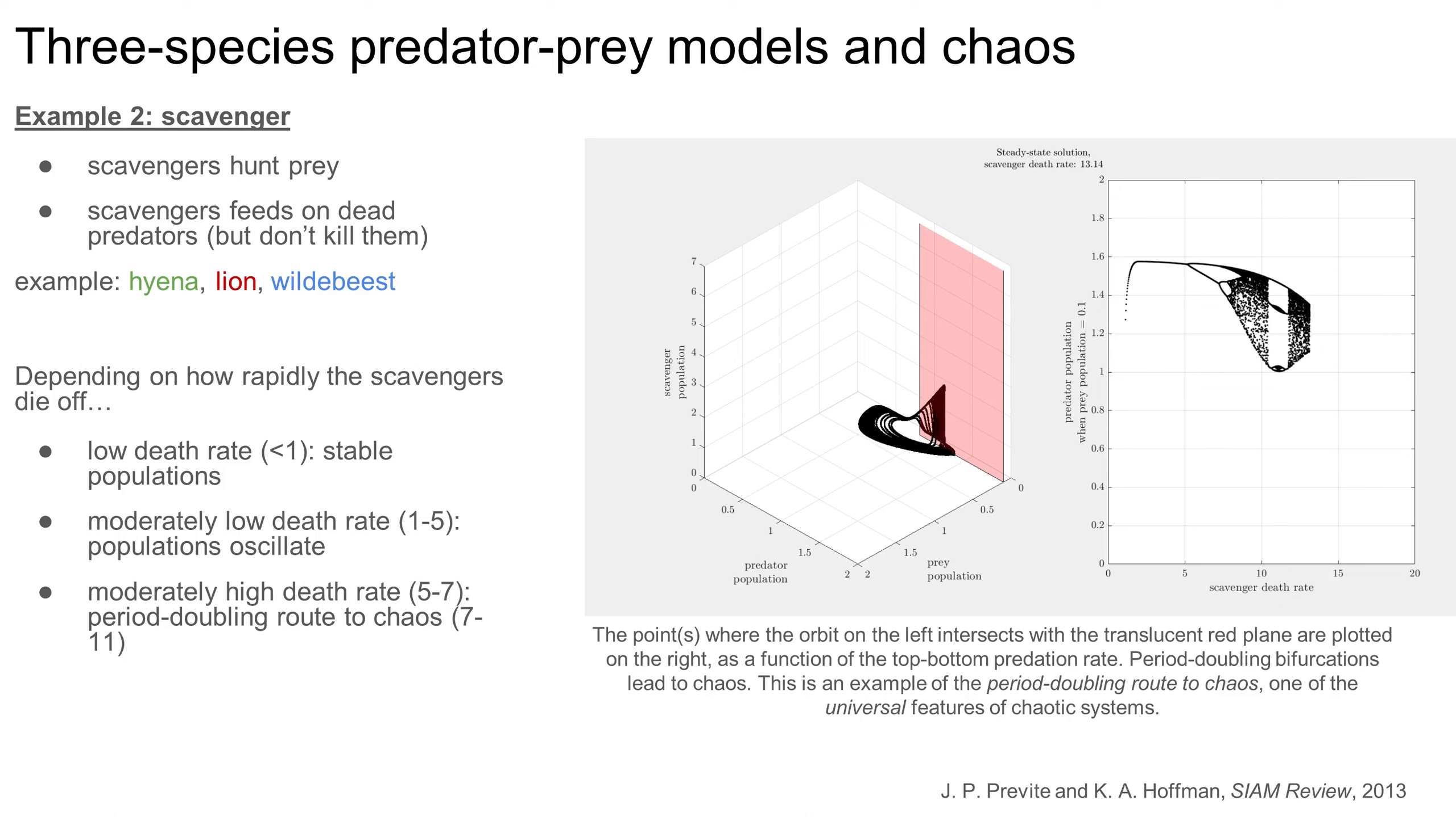However, what happens next is even more interesting. As the scavenger die-off rate climbs higher and higher, the system undergoes a cascade of period-halving bifurcations leading away from chaos back to order, culminating in stable population levels once the scavenger die-off rate is around 17 or higher.